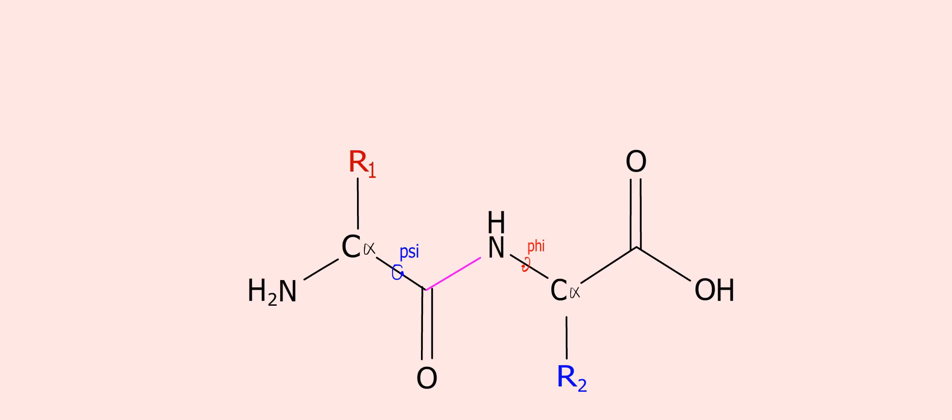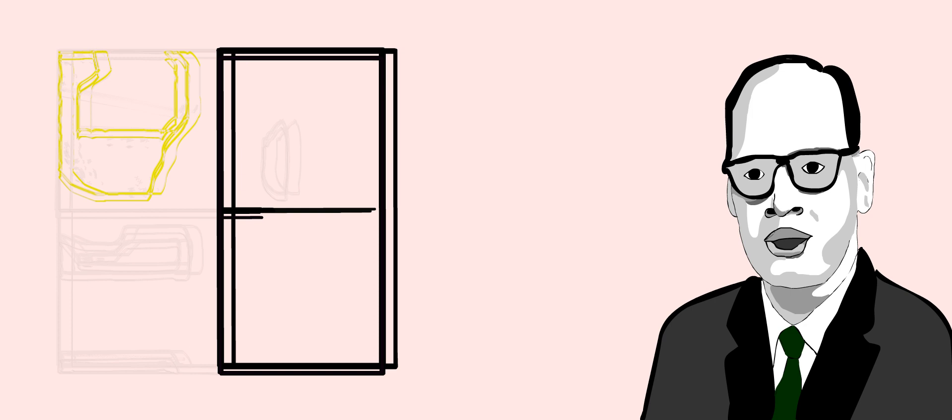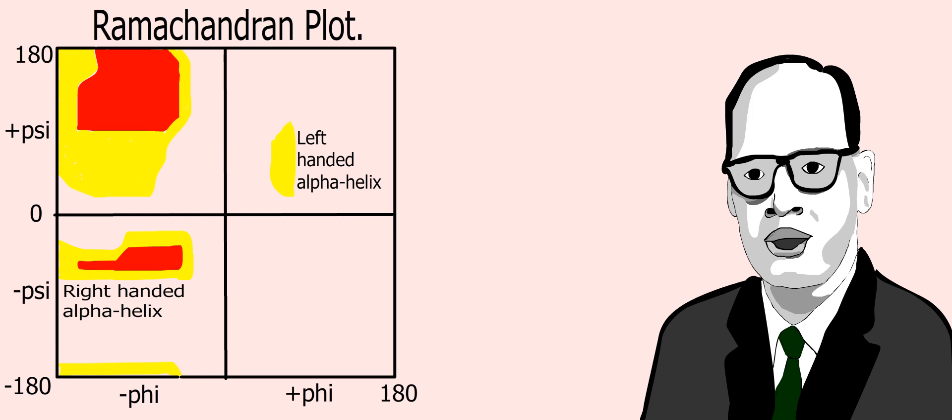Ramachandran plot. In a polypeptide, the main chain N-C-alpha and C-alpha-C bonds are relatively free to rotate. These rotations are represented by the torsion angles phi and psi, respectively. G.N. Ramachandran used computer models of small polypeptides to systematically verify phi and psi to find stable conformations.